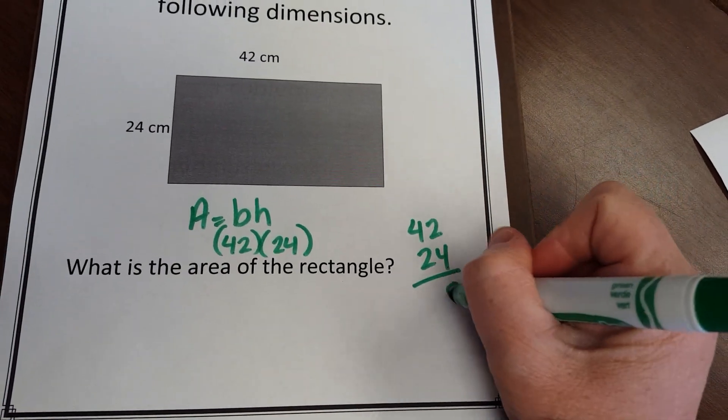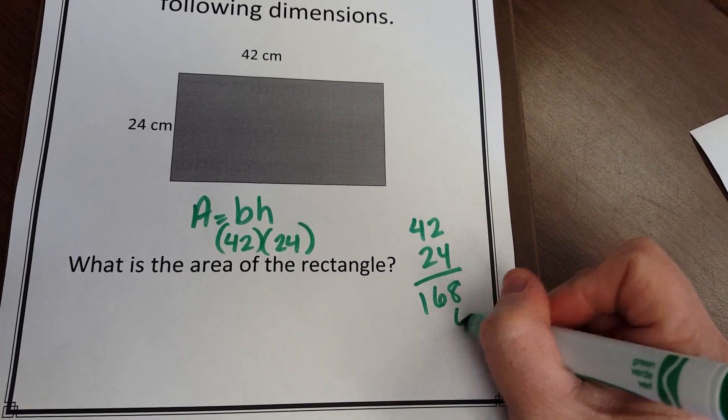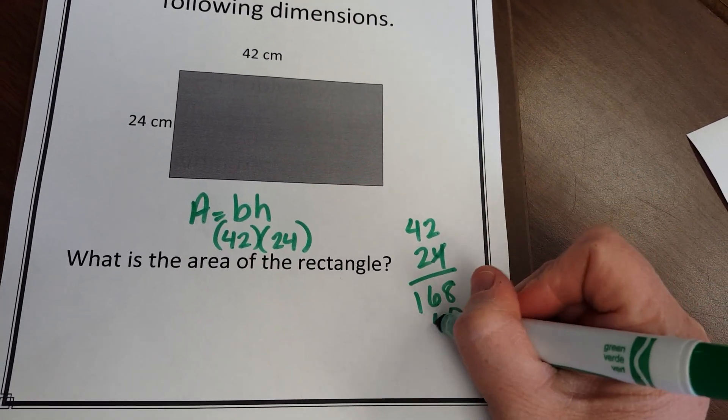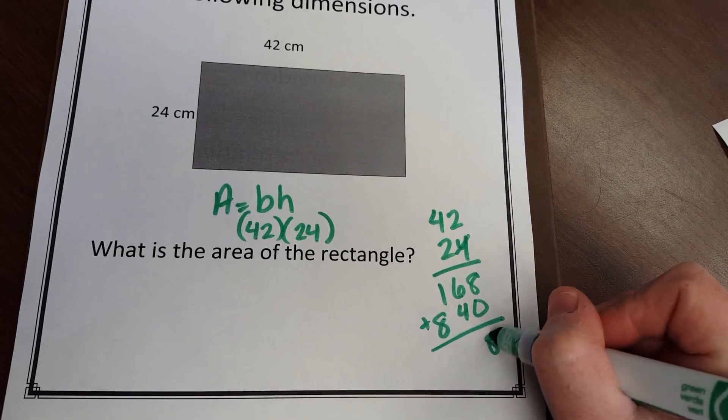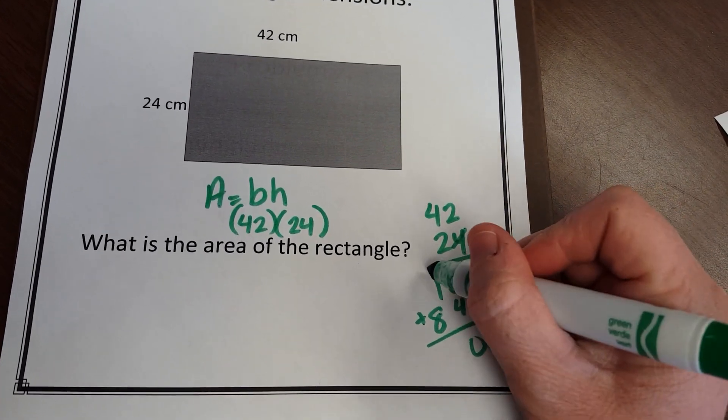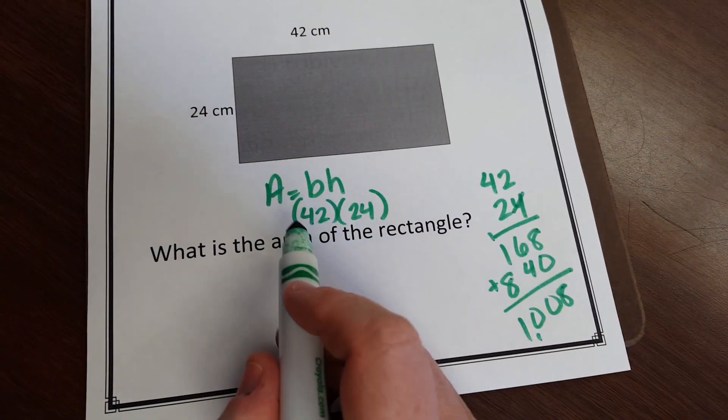Okay, so 4 times 2 is 8. 4 times 4 is 16. I'm going to add a 0 here. 2 times 2 is 4. 2 times 4 is 8. I'm going to add these up. 8 and 10, and then a 10 again. So when I multiply those...